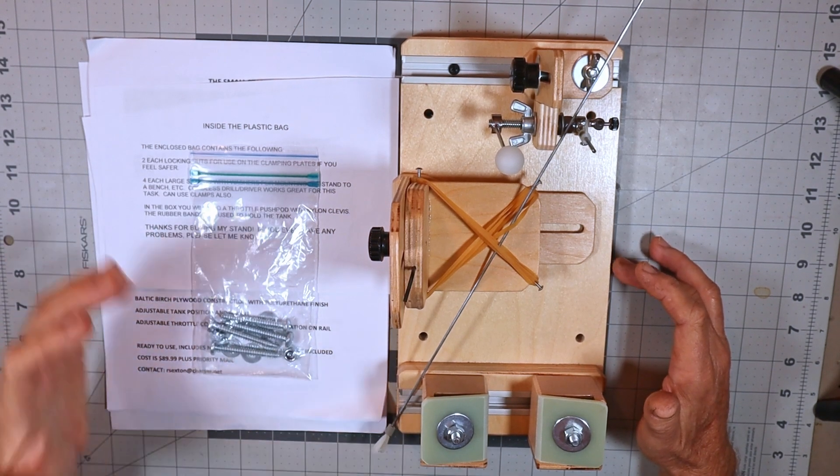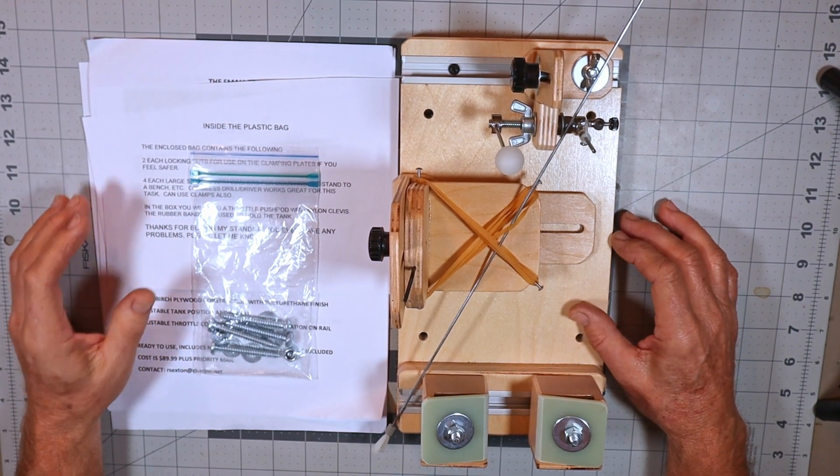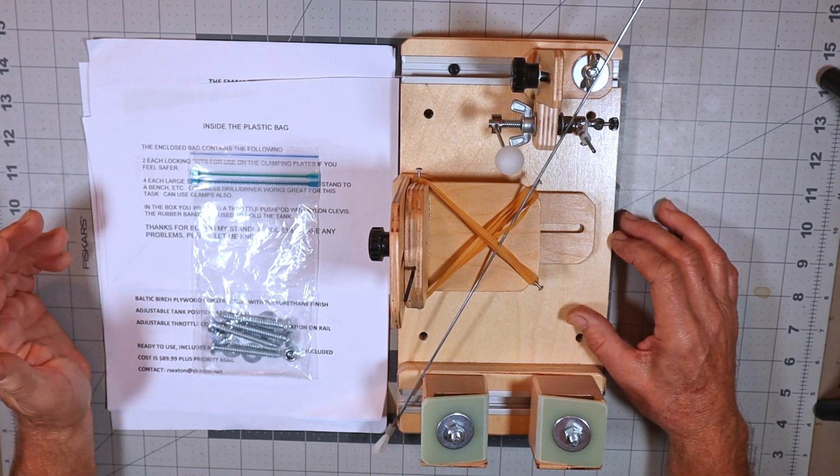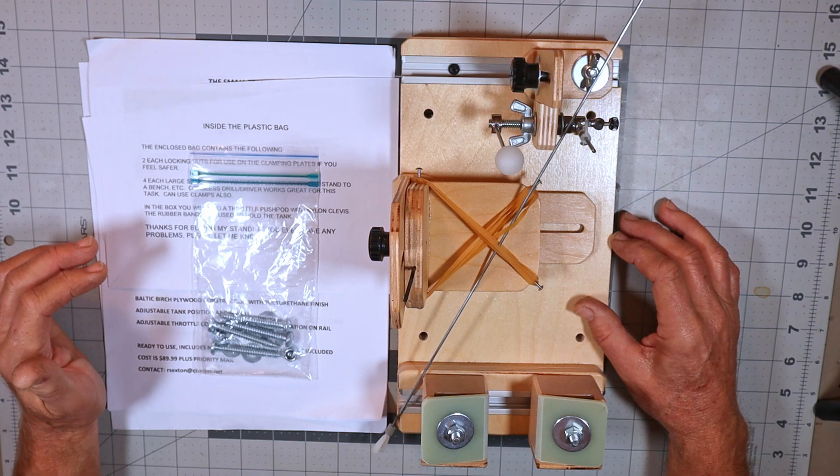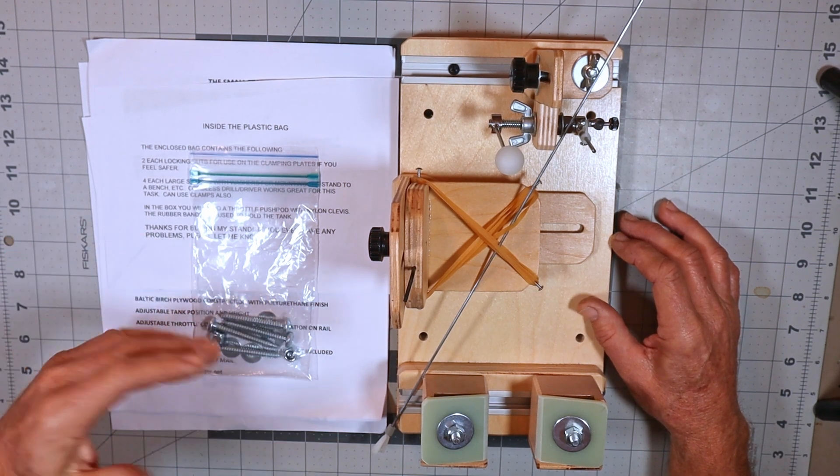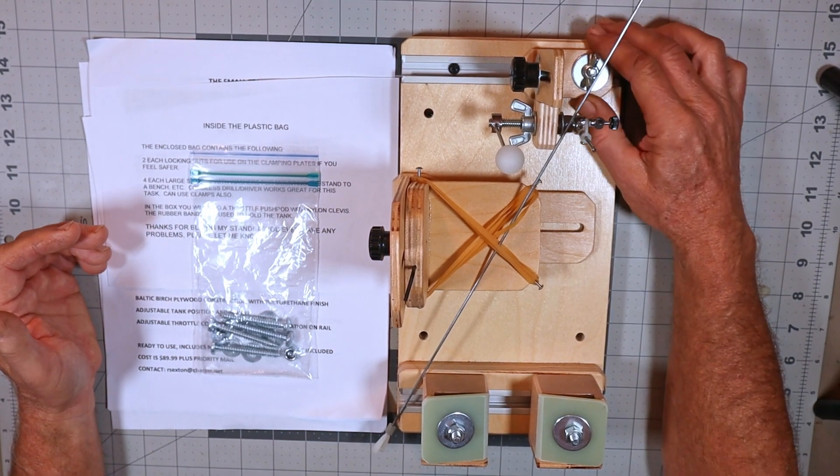Now there's an interesting story about how I came to acquire this. Nine days ago or so I posted a video on a FA 150 engine run and a viewer commented and asked whether I'd ever heard of a Ron Sexton test stand. At that time when I read the comment it didn't ring a bell to me so I went and did a search and found one on eBay.